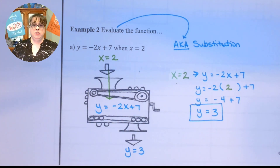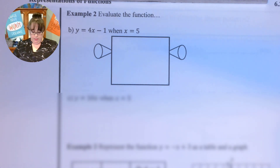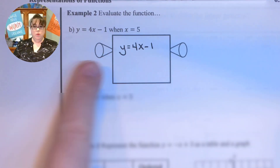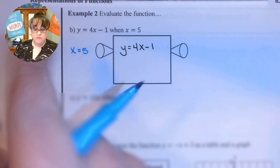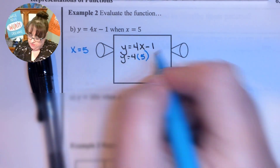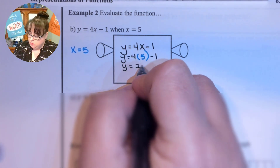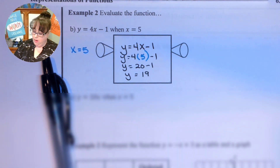When I say 'evaluate the function' it just means substitute. The machine this time is called 4x minus 1. We're going to put x equals 5 into the machine — every time I see an x I'm going to put a 5. So y equals 4 times 5 minus 1. 4 times 5 is 20, minus 1 is 19. So my answer is y equals 19.